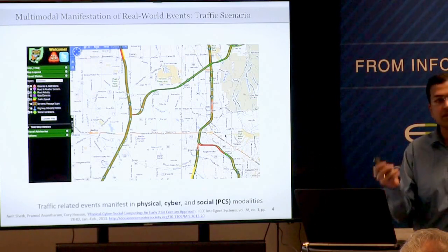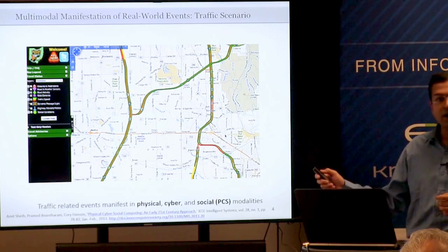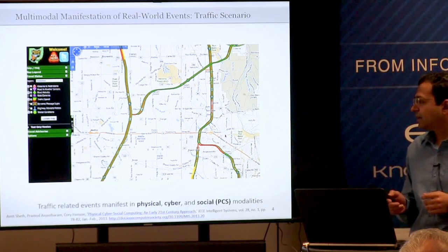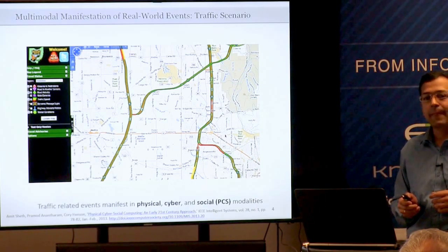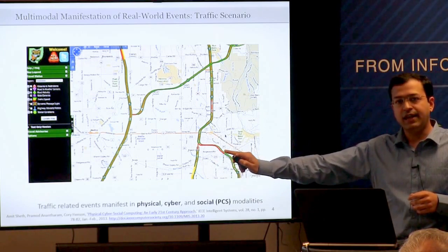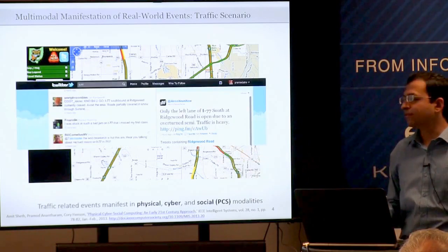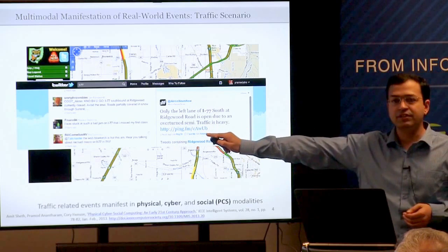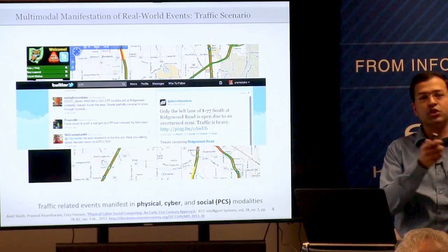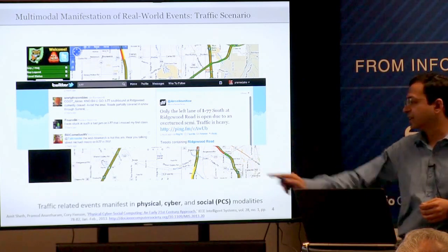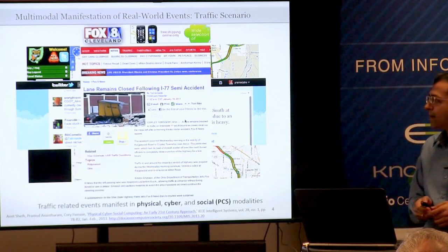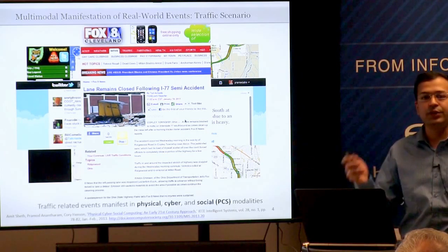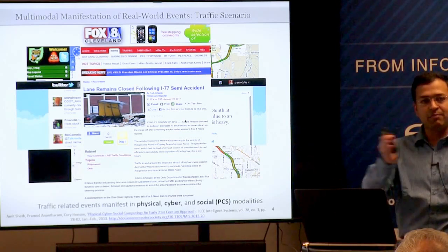In the domain of traffic, which I've used as the running use case throughout my dissertation due to the availability of open data, there is a map showing a red patch on the road network indicating delay. The actual reason for the delay was an accident reported on social media—information that is very complementary to what you see in the physical world through sensor data. The same accident was also reported on the cyber world. There are various modalities needed to understand an event by processing all of them.